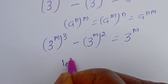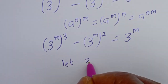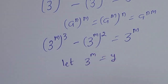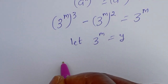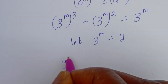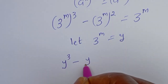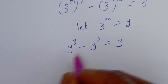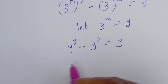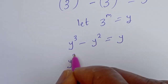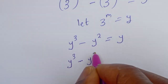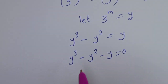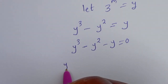Then let 3 to the power of M equal Y. So this becomes Y to the power of 3 minus Y squared is equal to Y. Let's bring Y to this side: Y cubed minus Y squared minus Y is equal to zero.